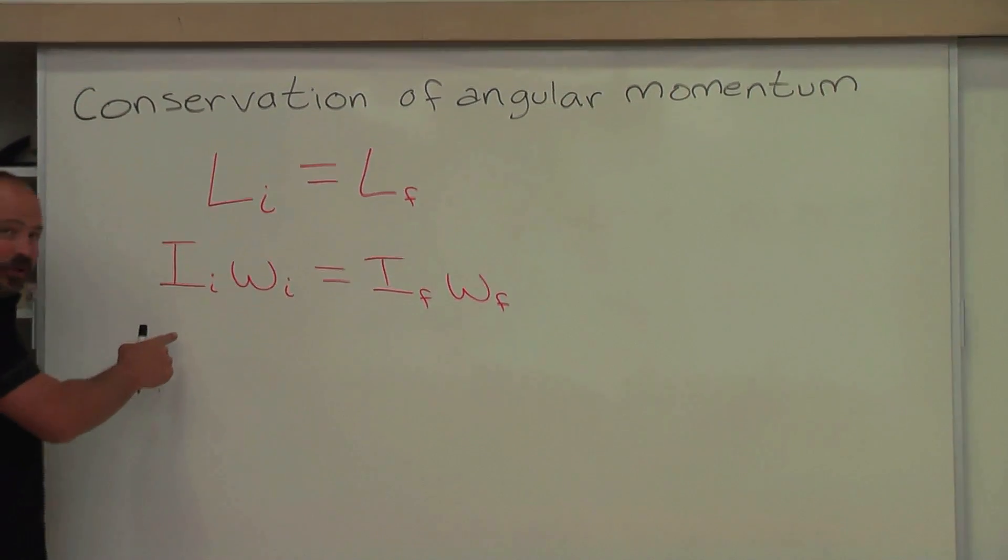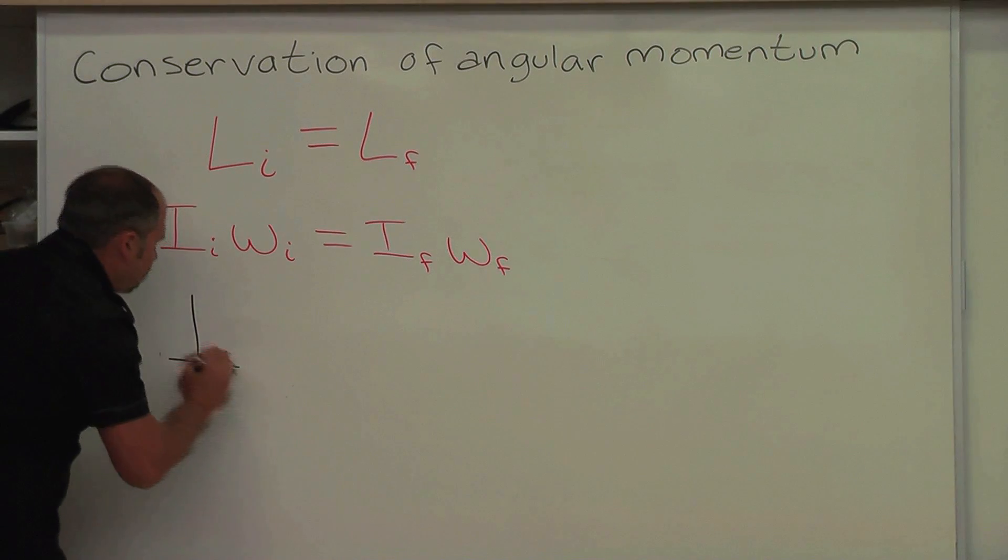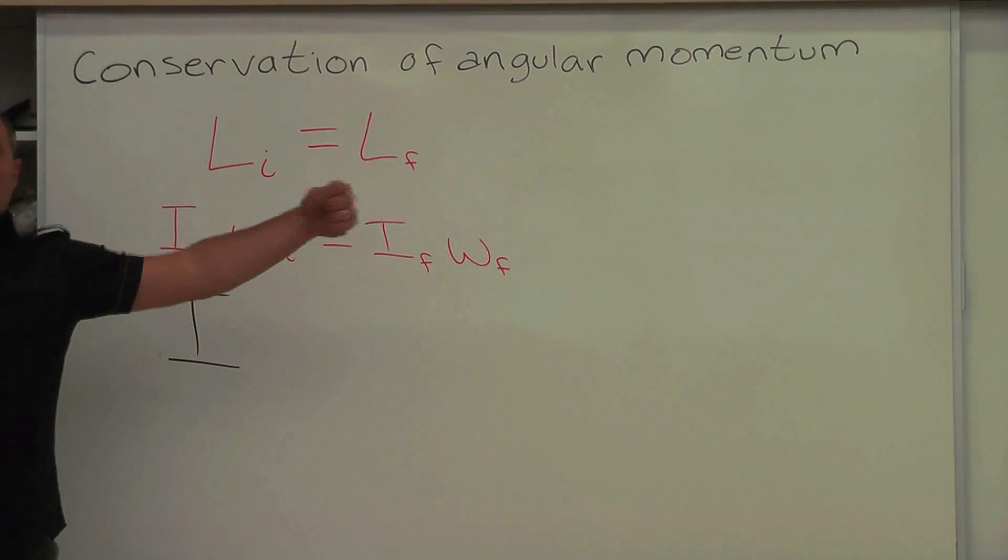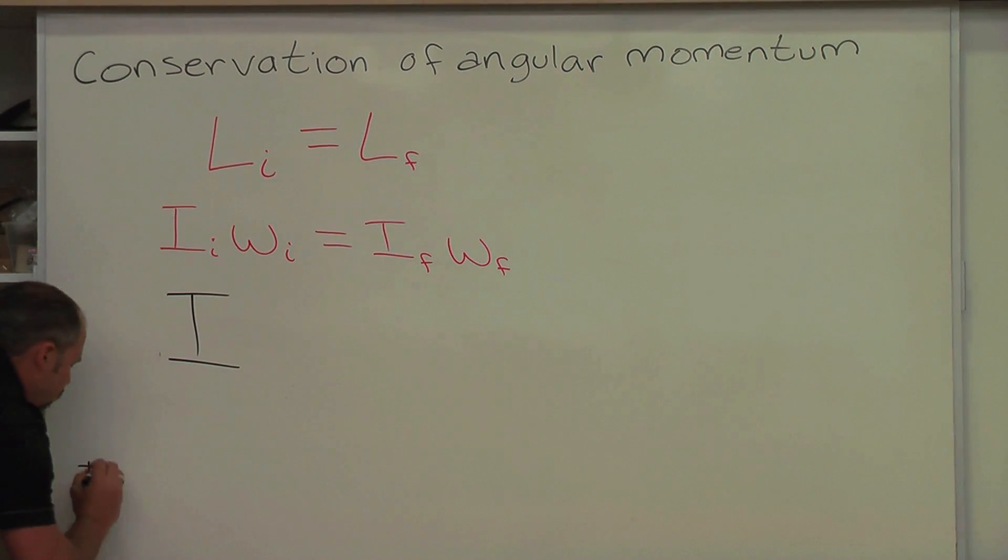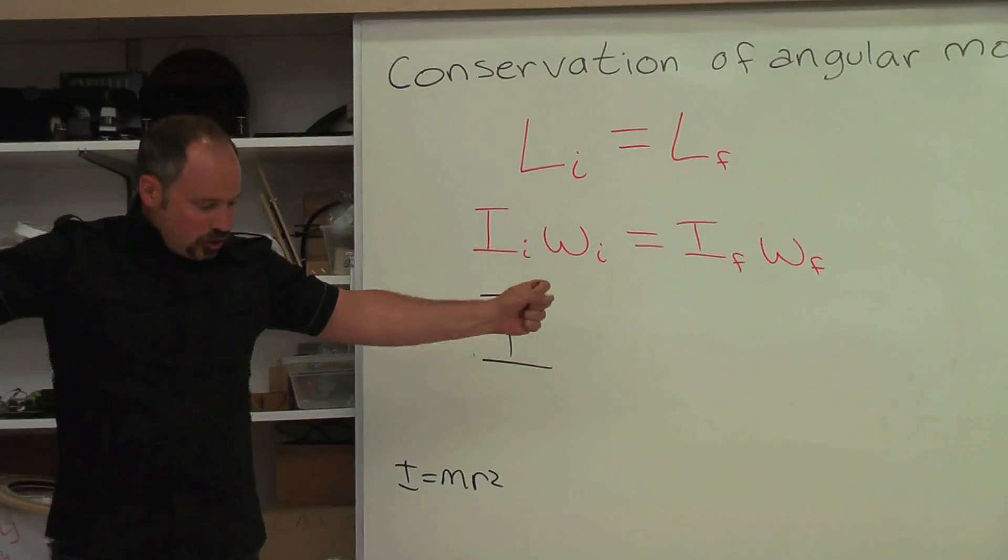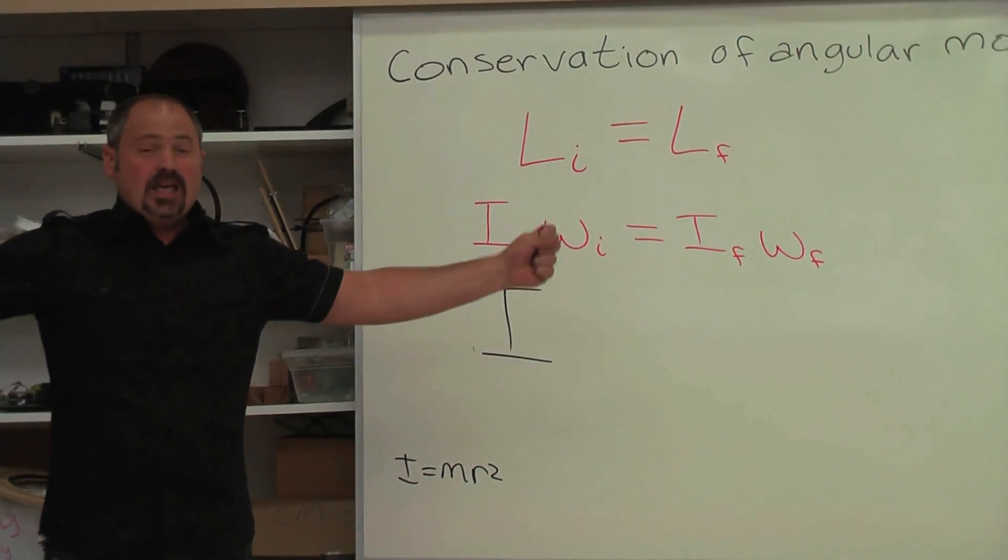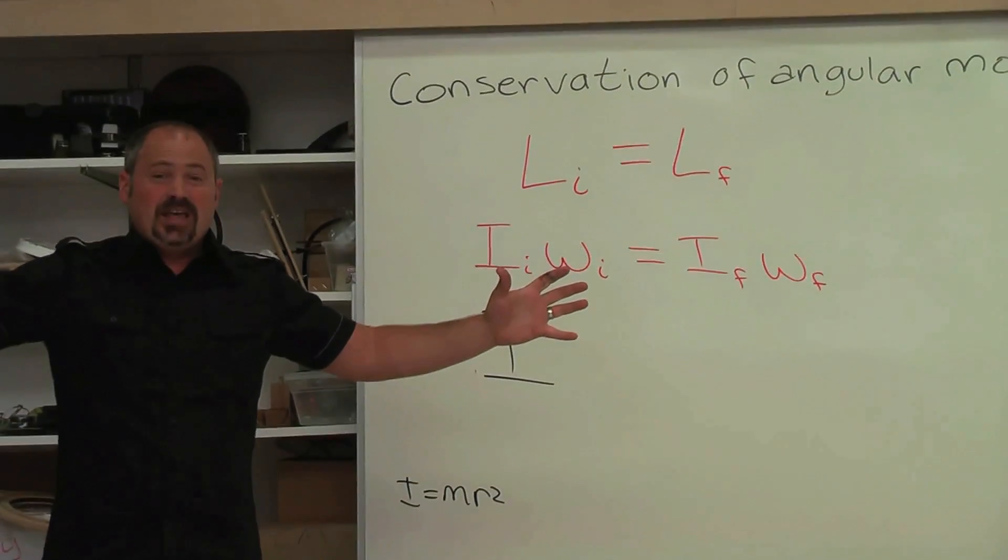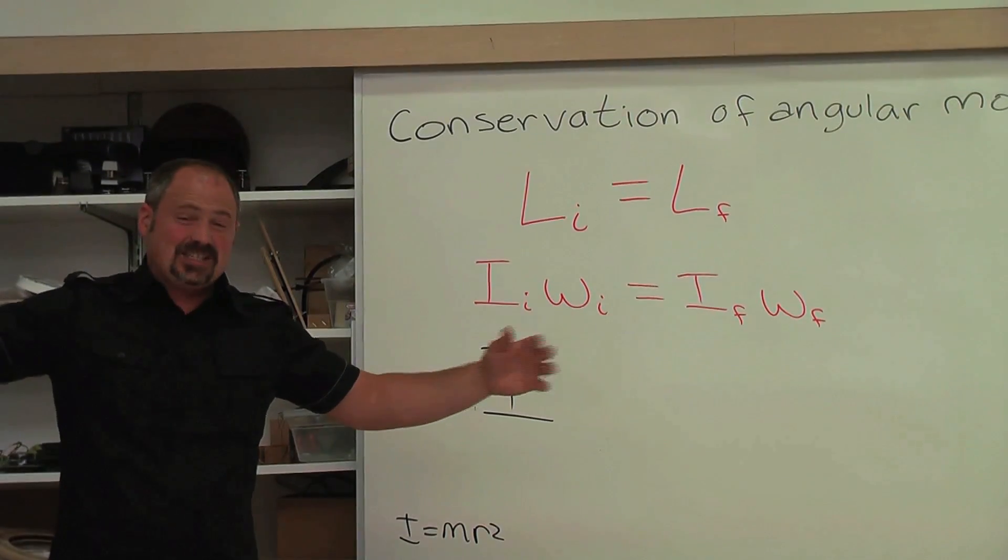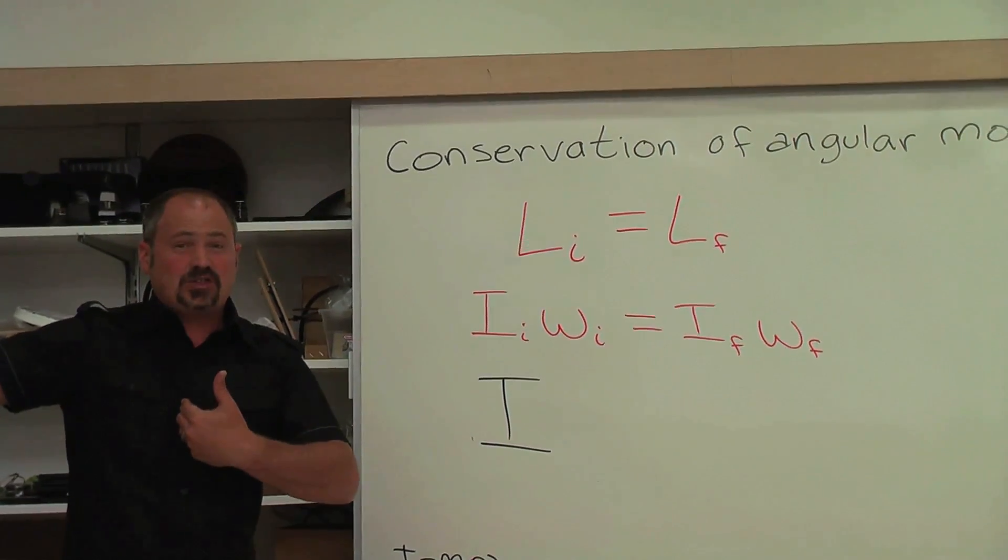So, for example, here, in the beginning, she had a large moment of inertia because her arms were out, and moment of inertia is equal to mr squared. That is, the inertia to rotation - that's what moment of inertia is - is equal to the mass of the object times the distance it is from the rotation axis squared.